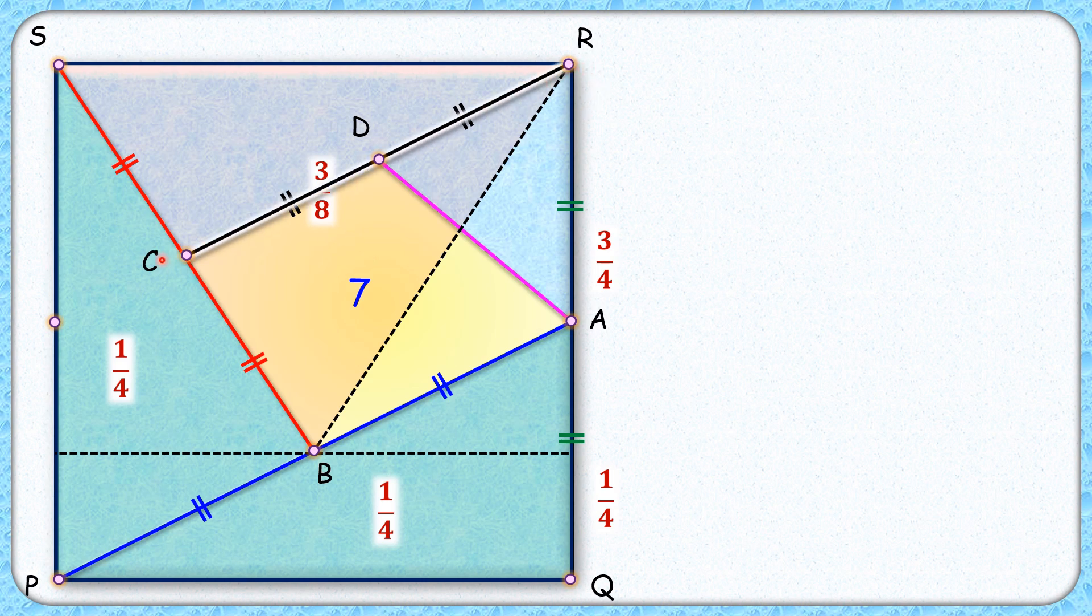Here RC is the median, so it will again divide it into two equal areas. And area of this SCR is nothing but three by sixteenth of the full square.